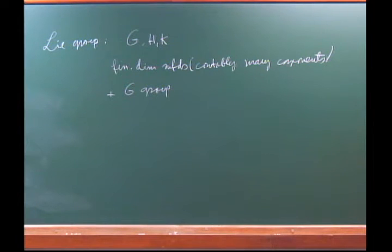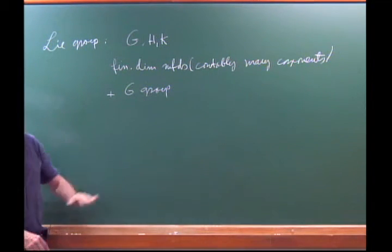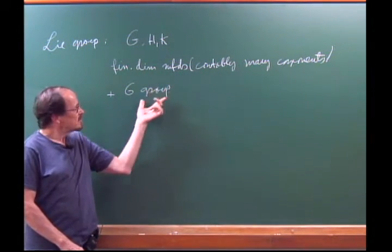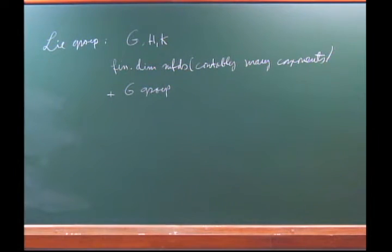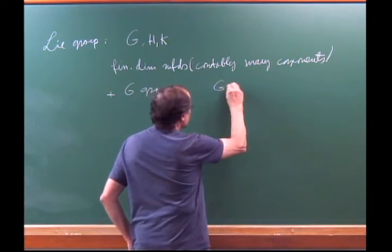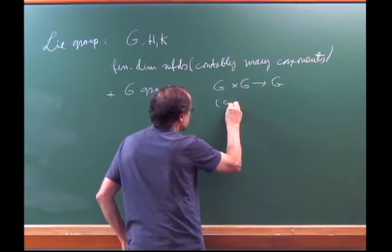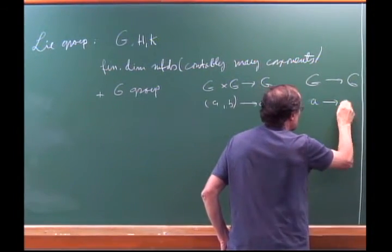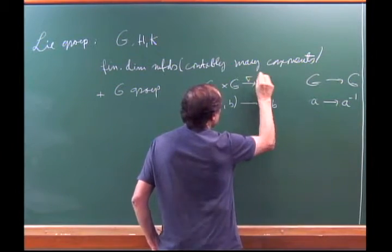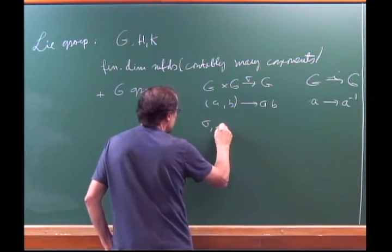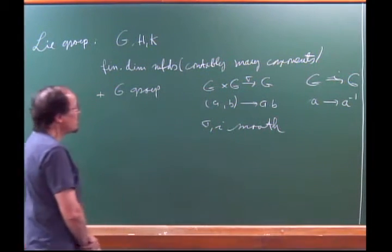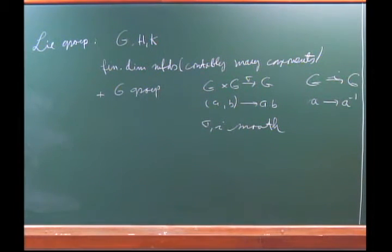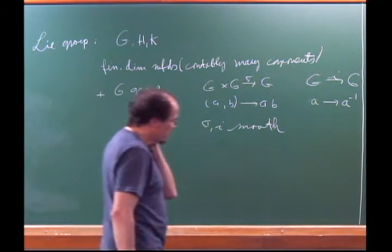Of course I have to require some kind of compatibility. It's a group, it's a smooth manifold — how is that compatible? You assume that multiplication is smooth: you have a map G×G → G for multiplication, and another map sigma for the inverse. Both sigma and the inverse map should be smooth. That's the compatibility condition, and that's a Lie group.